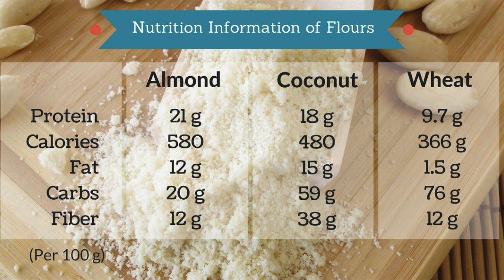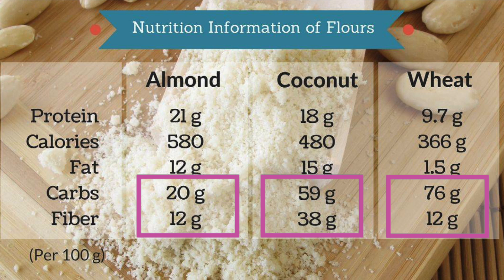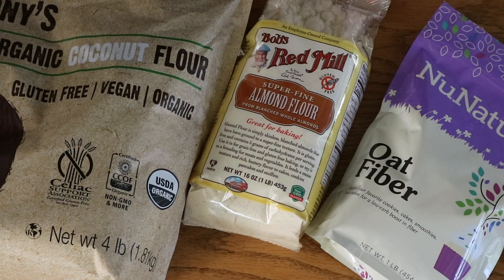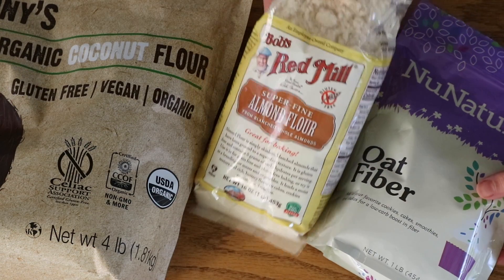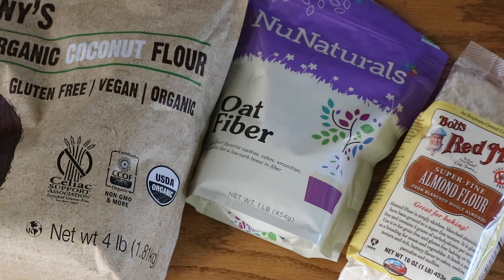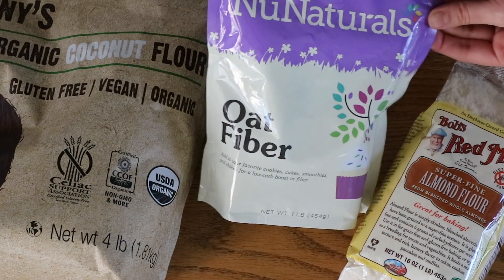The main flour substitutes we use in keto baking are almond flour and coconut flour. Here's a comparison per 100 grams of almond, coconut, and wheat flours. When you look at coconut, you might think it's a super high carb count and not keto friendly. But keep in mind that when we use coconut flour in a keto recipe, we're only using it for about 5-10% of the overall flour content, with almond flour making up 90-95% of it. Oat fiber is another substitute more people are discovering recently, and it's a good substitute for coconut flour.